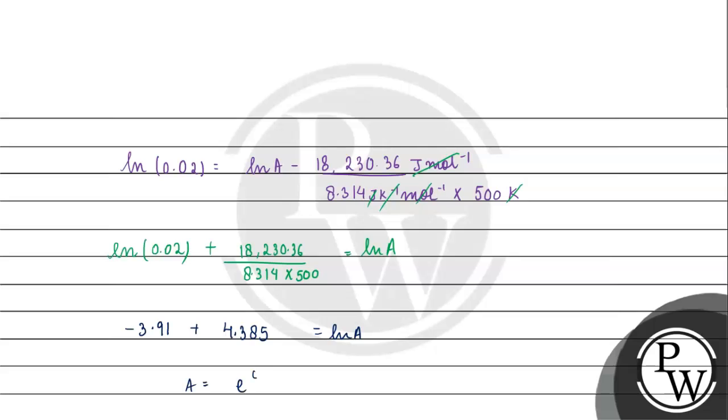So A will be equals to e to the power of 0.475. The value of e to this power will be 1.6086, or we can say 1.61.